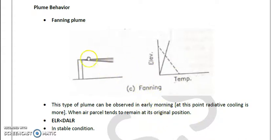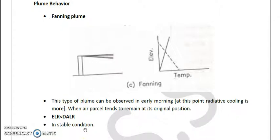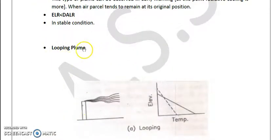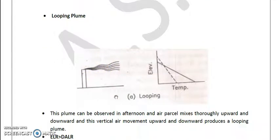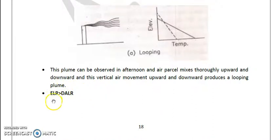Remember this thing: it is observed in early morning in stable condition. These are the things which examiner asks. Then we talk about looping plume, so the loops are formed when the smoke travels. This is generally observed in unstable condition where we see that environmental lapse rate is more than dry adiabatic lapse rate.